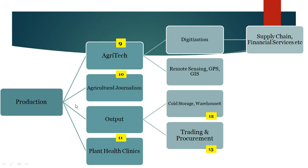Now, agri-tech. In this digital era, agriculture is also transforming through technology — through the use of apps, remote sensing, GPS, GIS — and all of these have increased intensively. This can be discussed in detail in some other video.